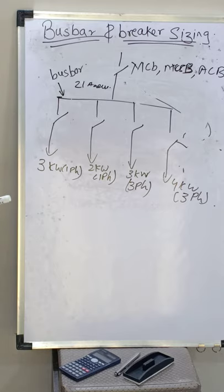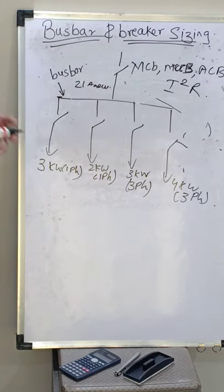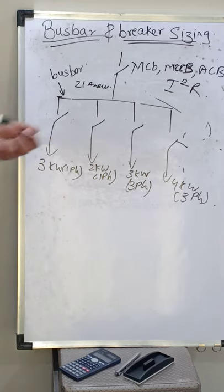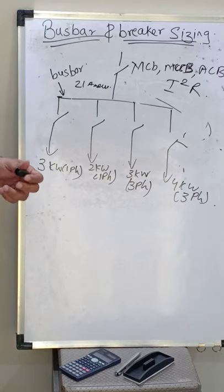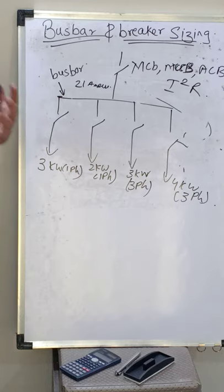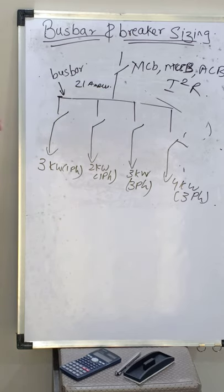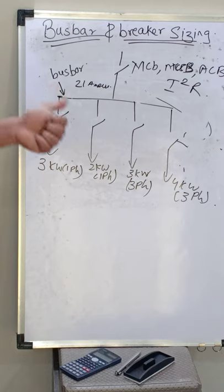Suppose the motor was designed for 20 ampere. Now with the heavy mechanical load it draws 25 ampere. That extra 5 ampere causes additional copper losses — I²R losses — meaning electrical energy converting into heat energy. This extra heat will damage or burn the motor winding. To avoid this, we require overload protection. I set the MCB overload rating to 20 ampere, so the moment the motor current reaches 21 ampere, the breaker trips.